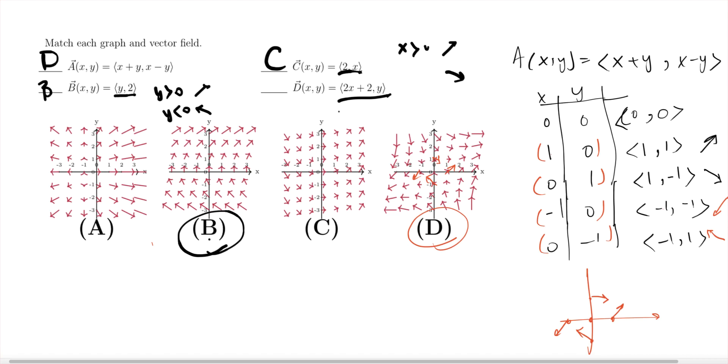You can check a few more points and you get A. So basically, for anything you're not very comfortable with, you find a few points on them.